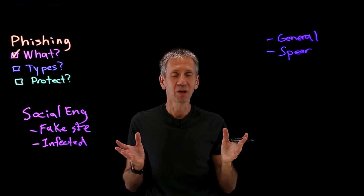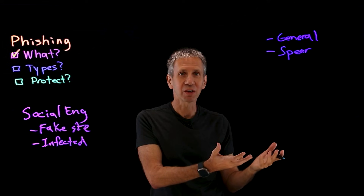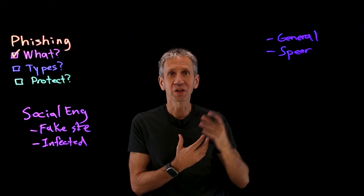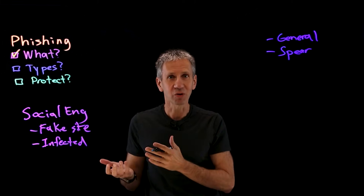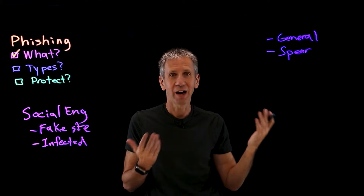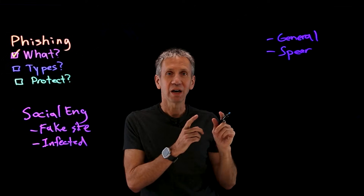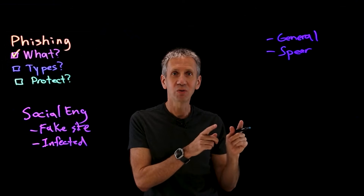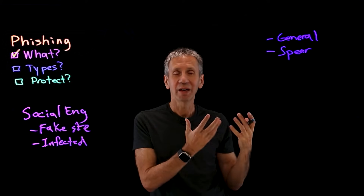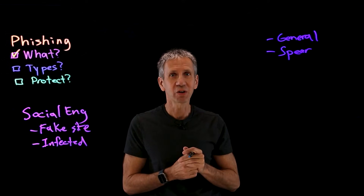Spear phishing doesn't have the same widespread appeal, but it can be more effective. For instance, if the attacker knows you bank at a particular place, they'll send the phishing email as if it came from that bank. If the target doesn't have an account there, they won't fall for it — but for those who do, it's very effective. Another example: the email appears to come from your employer or even your boss, spoofing the sender address so you're likely to click on it.